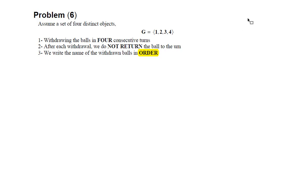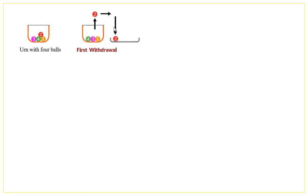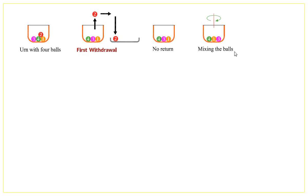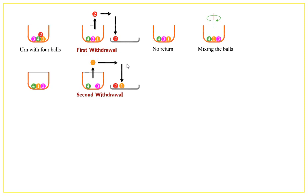So let's see how to do that. We have the urn with four objects and we are going to withdraw the first object and keep it outside. Now we are left with three objects only. We mix all these objects together to make sure that the event of the withdrawal is a random event. We withdraw the second object and keep it outside or write its name down in order. The first object withdrawn is two and the second is one. We do not return any object to the urn.